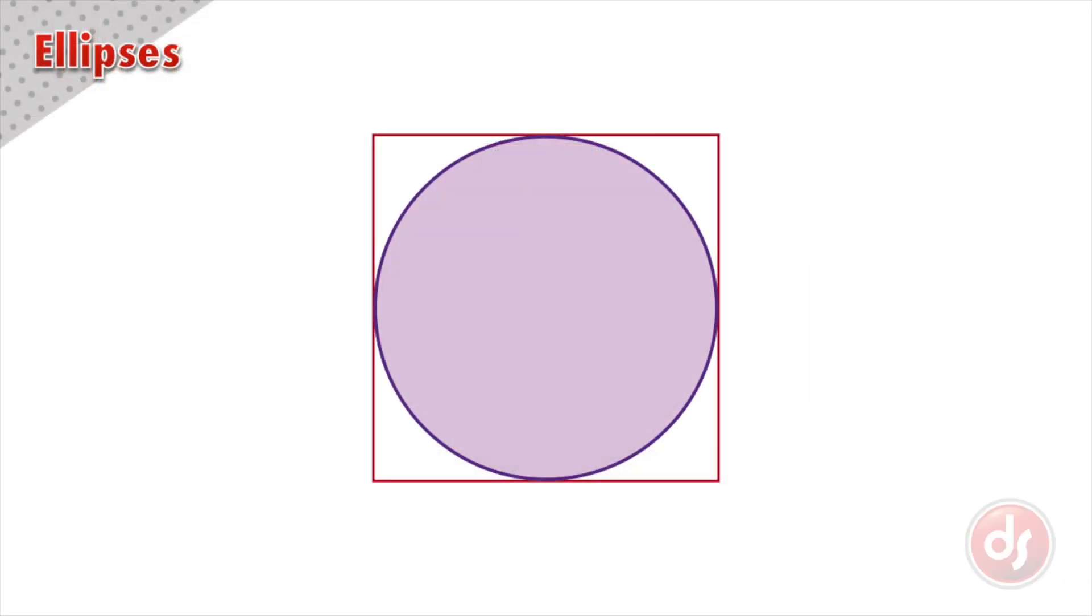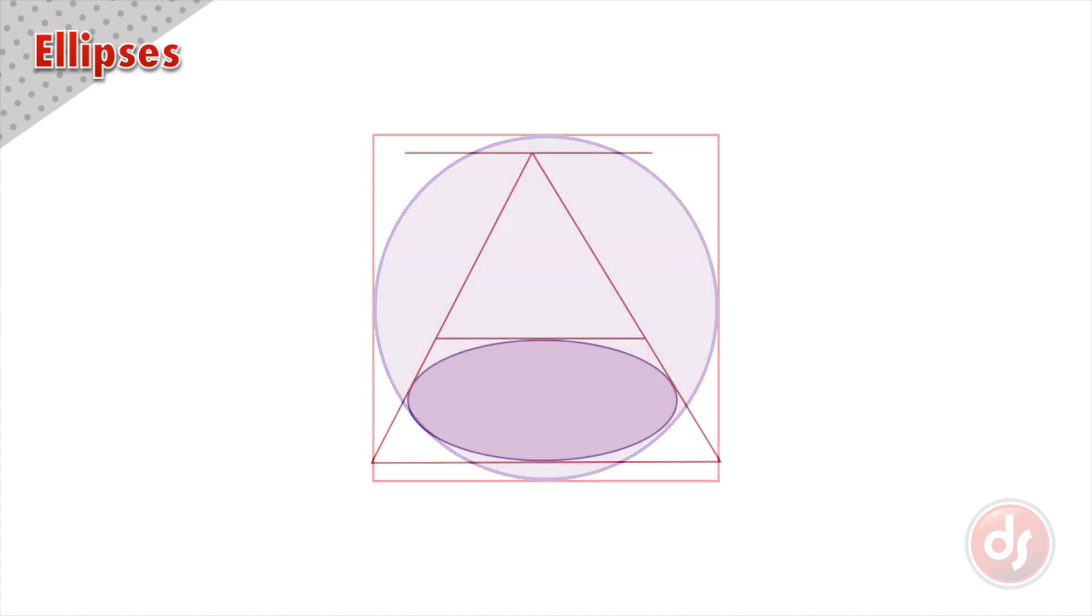An ellipse is simply a circle tipped in space. If we take this circle and lay it down, it will become an ellipse.